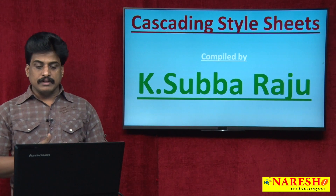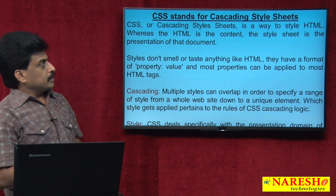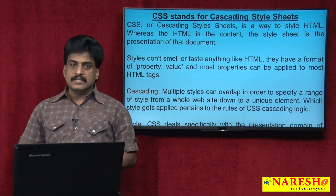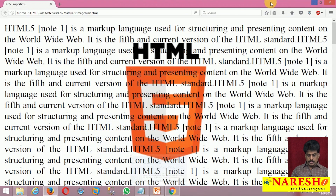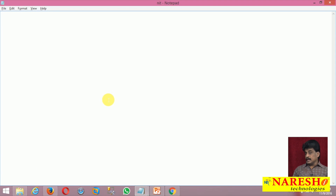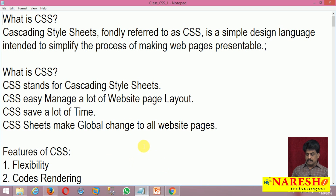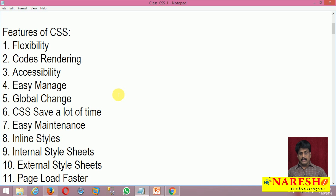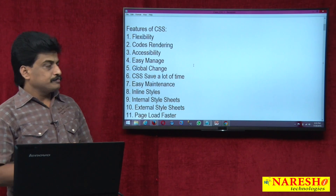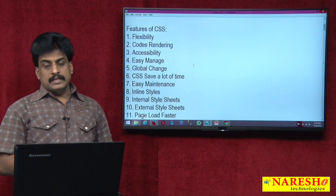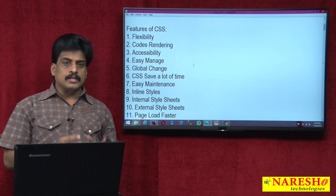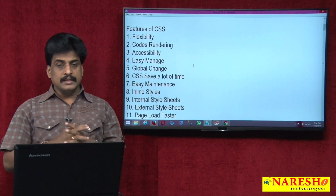I have written a big information related to cascading style sheets. First, I will show you the information completely. What are the features of CSS? CSS has a big list of features. Flexibility — any browser, any technology, and any platform. Code rendering — it is almost all equal to the cascading mechanism; rendering means bring. Accessibility — on any technology area, easily we can access. Accessibility is simple and effective.